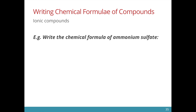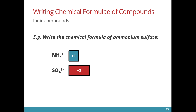One more example: ammonium sulfate. The ammonium ion is NH4+ and the sulfate ion is SO4 2-. We will need two ammonium ions to balance the negative 2 charge of sulfate.